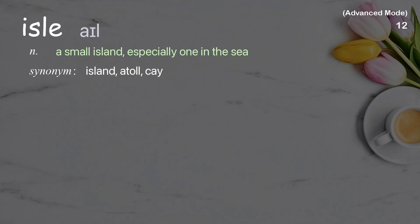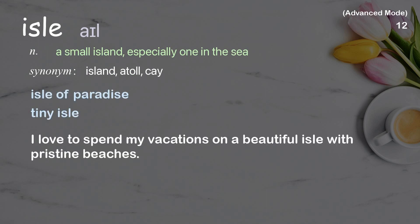Isle: a small island, especially one in the sea. Examples: olive paradise; tiny isle; I love to spend my vacations on a beautiful isle with pristine beaches.